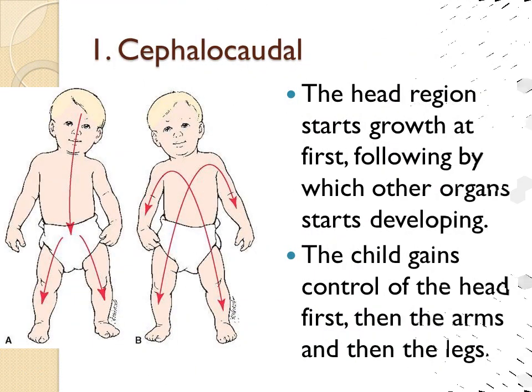The first principle describes the direction of growth and development. The head region starts growth first, following which other organs start developing. The child gains control of the head first, then the arms, and then the legs. Infants develop control of the head and face movements in the first two months. In the next few months, they are able to lift themselves up by using their arms. Next, they gain control over legs and are able to crawl, stand, walk, run, jump, and climb day by day.